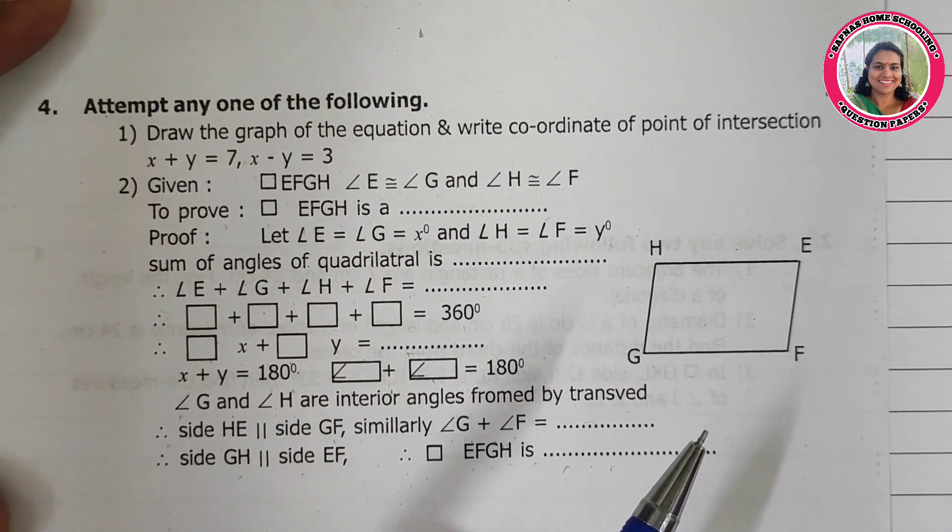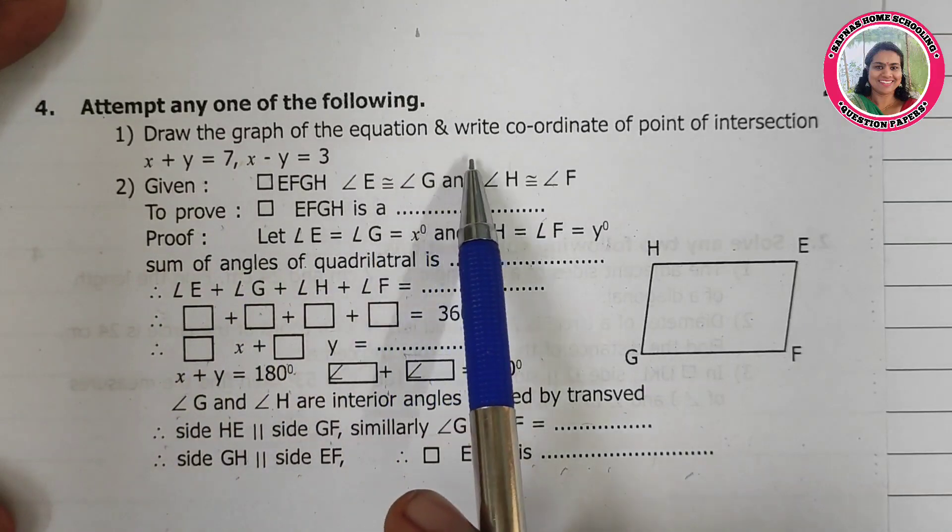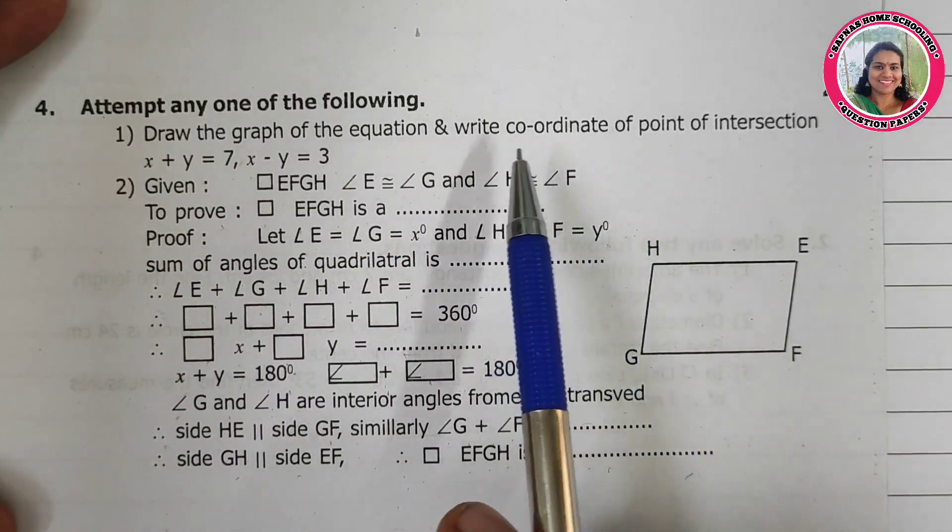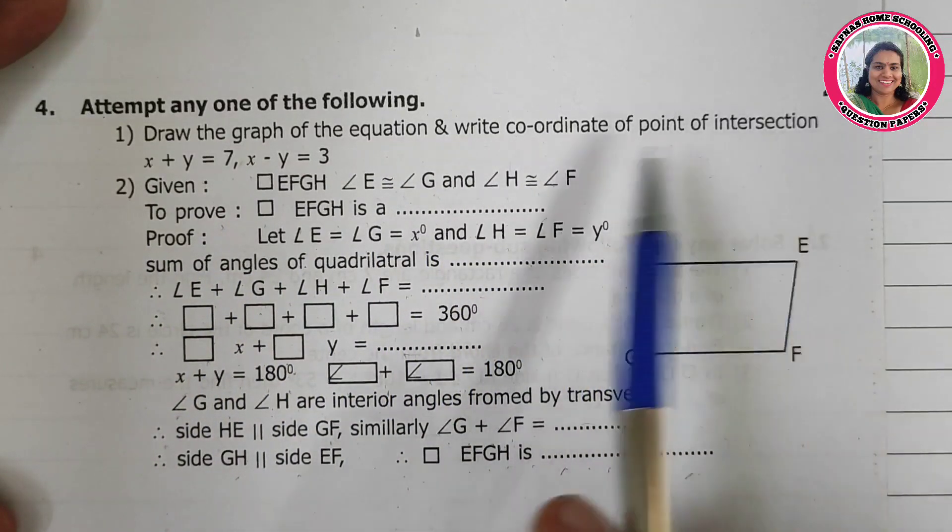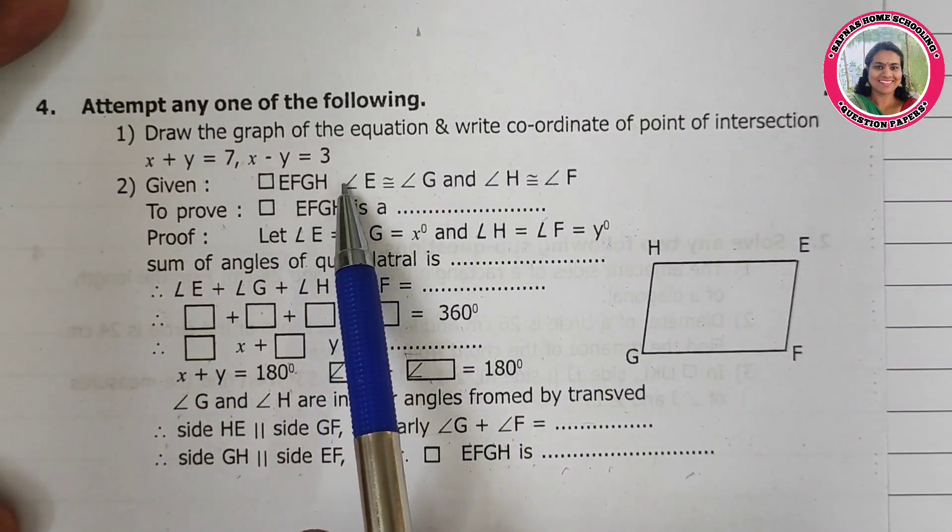Now question 4: Attempt any one of the following. Draw the graph of the equation and write coordinates of points of intersection: x plus y is equal to 7 and x minus y is equal to 3.